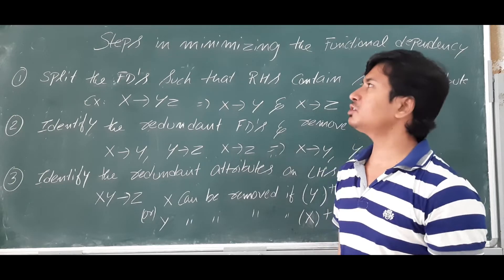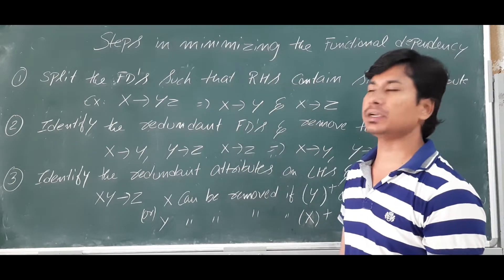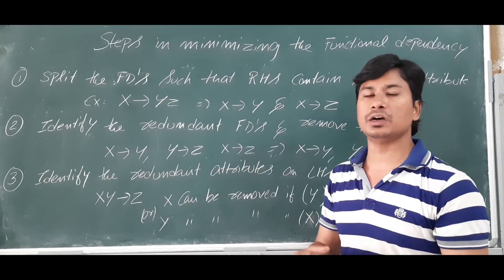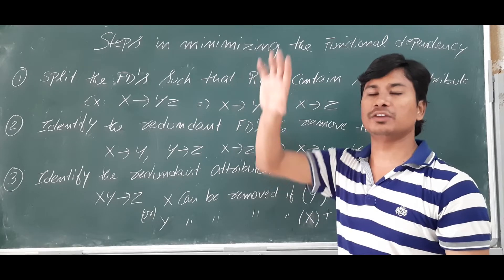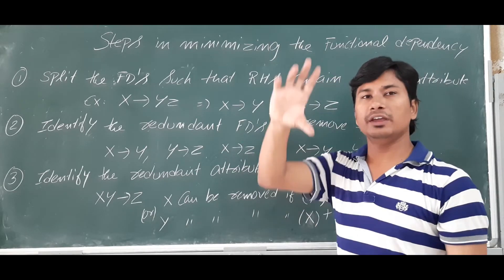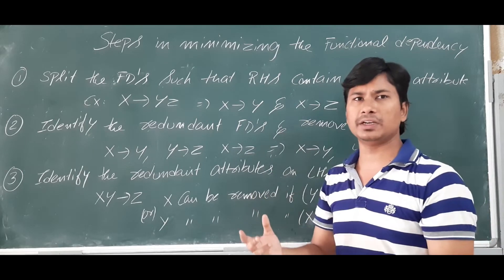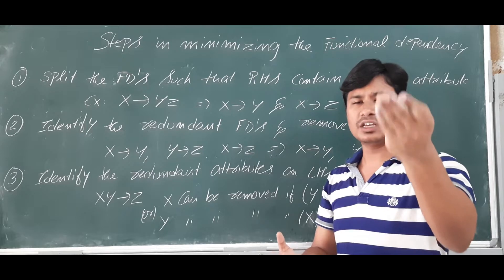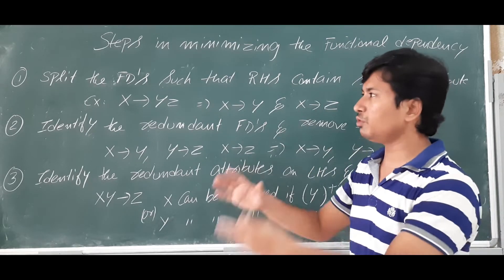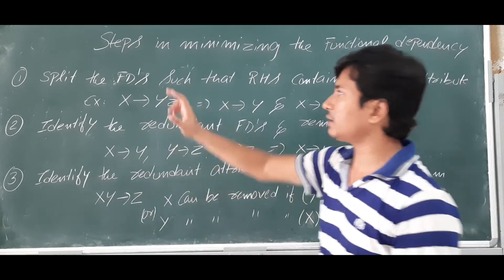Good morning students. In this video we will discuss the steps in minimizing the functional dependencies. We have to follow three steps to reduce the set of functional dependencies. If I have four functional dependencies and the same work can be done by two functional dependencies, then I can reduce the set of four to a set of two. That is what we will try to do in this process.